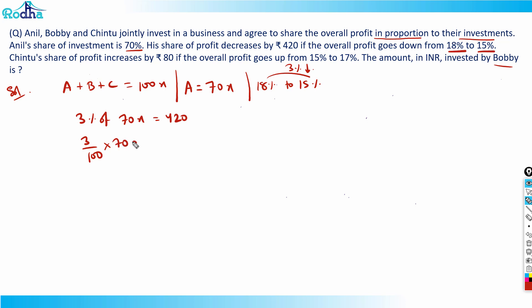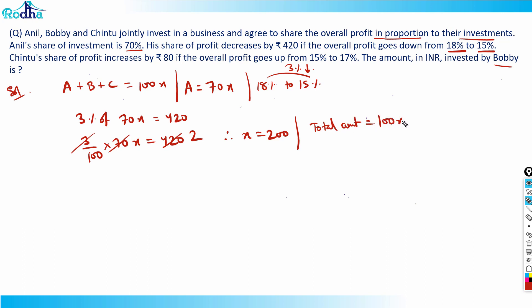Solving: (3/100) × 70x = 420. Simplifying, 210x/100 = 420, so x = 200. Therefore, the total investment is 100x = 100 × 200 = ₹20,000.